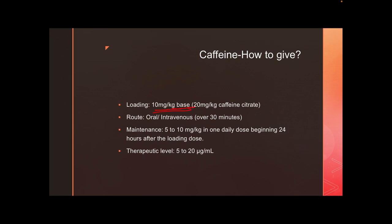The loading dose is 10 mg per kg of caffeine base. Note that syrups and injections come as caffeine citrate, which contains twice the citrate as base — so 1 mL of 20 mg caffeine citrate gives only 10 mg of caffeine base. When writing prescriptions, be sure whether you are writing base or citrate, otherwise the baby may receive only 5 mg per kg base instead of 10 mg per kg base.